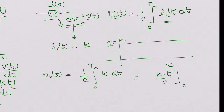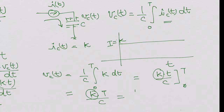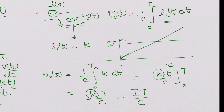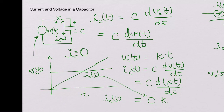That gives K times T over C from 0 to T, which is nothing but I times T over C. So the voltage keeps on increasing across the capacitor — if you force a constant current, the voltage changes linearly with time. We have seen the symmetry: applying a linearly increasing voltage gives a constant current, and forcing a constant current gives a linearly increasing voltage.